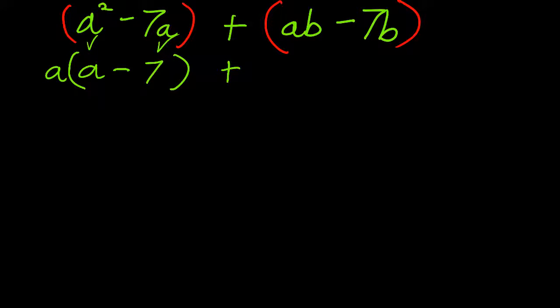Now, I'm going to factor the second set of parentheses by GCF. Both of these terms have a b in them, so I'll pull out the b as a common factor. B times what is ab? Well, times a.